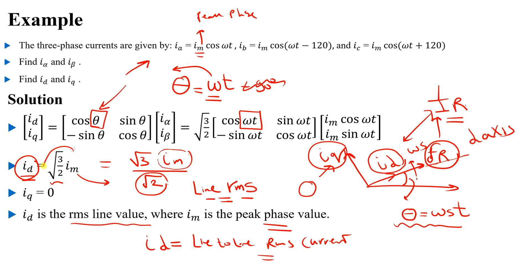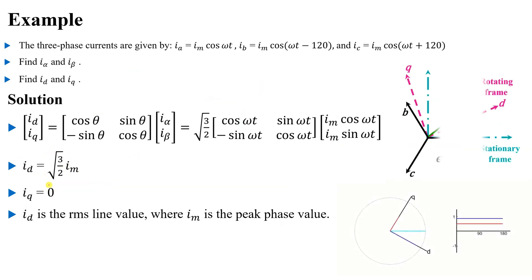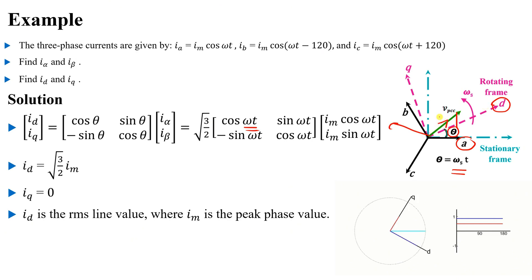Before ending: remember that the angle of the rotating dq frame — the angle between the d-axis and phase A — is selected as θ. In this case, θ = ω_s·t (synchronous speed times time). Selecting this means the d-axis is exactly aligned with the rotating vector, since the transformation angle equals the vector's angle.